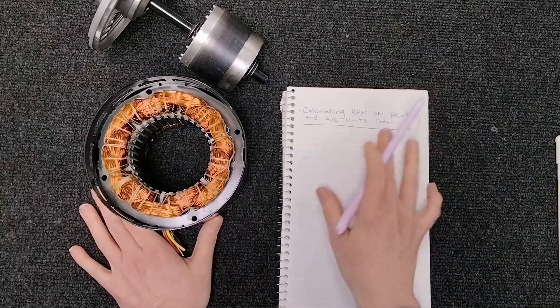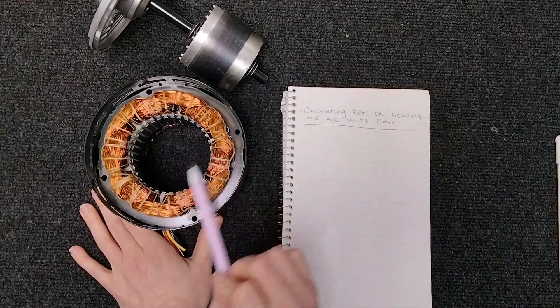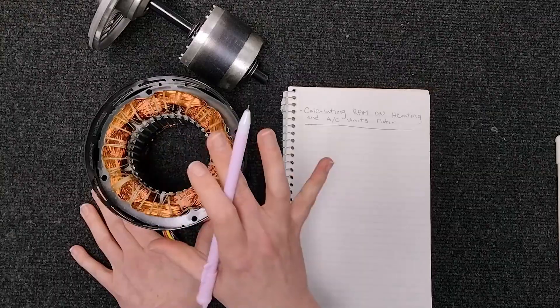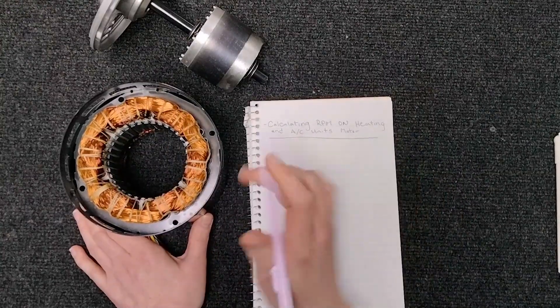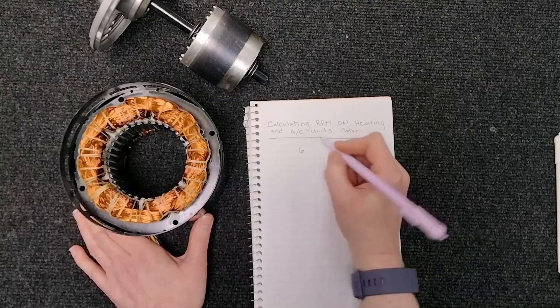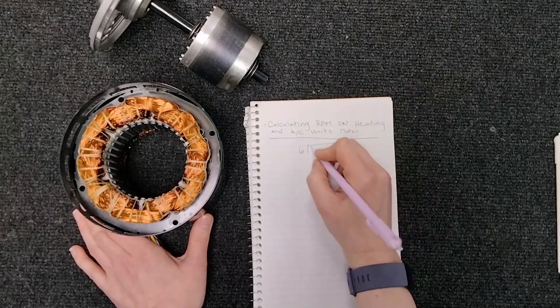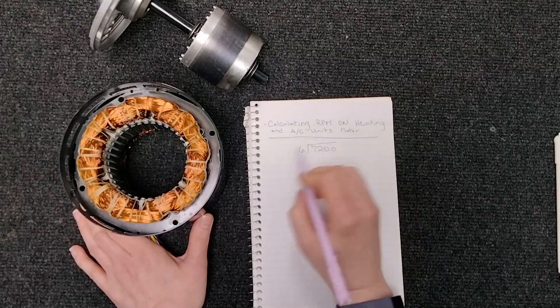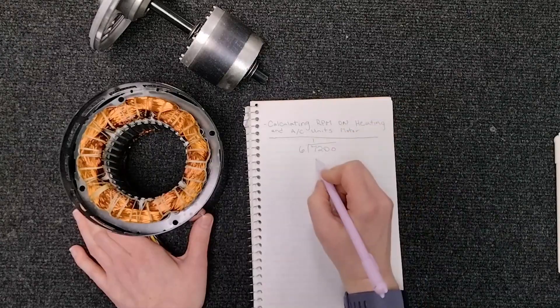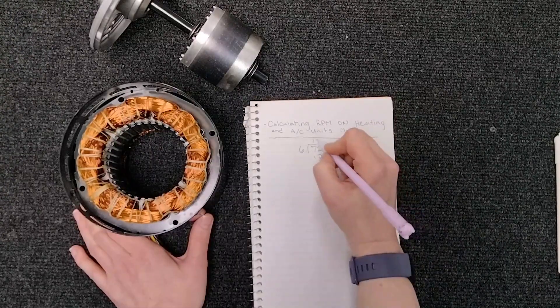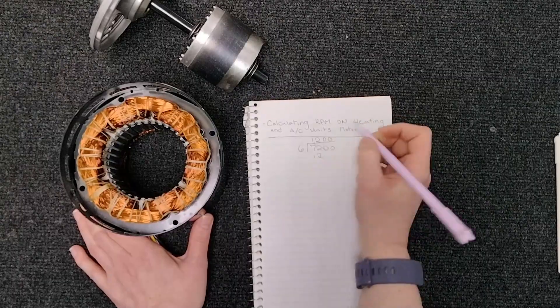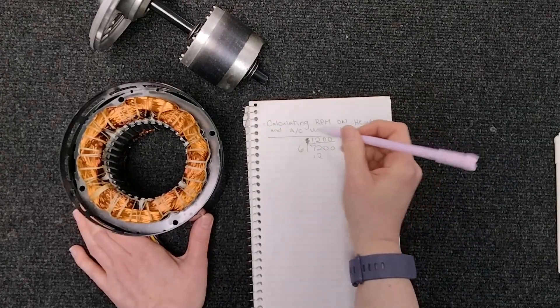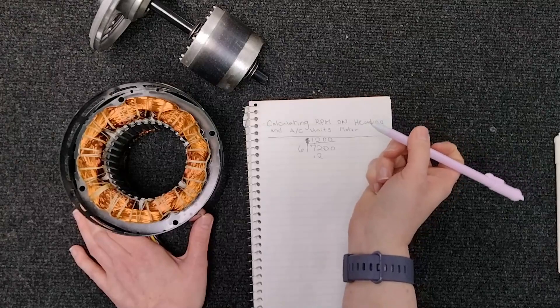So when we're calculating this, we're going to take these poles. This is on an AC voltage motor. DC is going to be different. So on an AC motor we're going to divide 7200 by the number of poles. And so obviously we're going to do our math here and add our zeros. And now we know it's 1200 RPM.